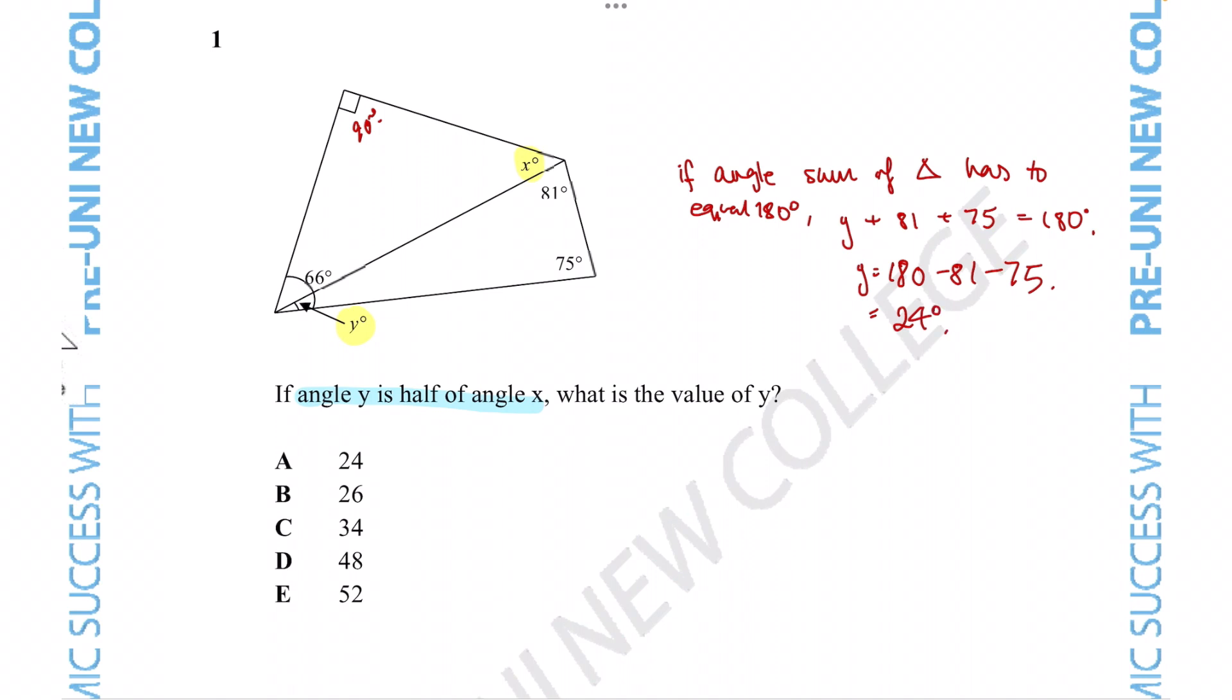Now, we're told that x is actually half of this angle, sorry, y is actually half of angle x. And we know what y is, so we can replace the y with 24 degrees. We can see that x is going to equal 48 degrees.